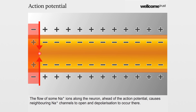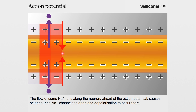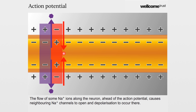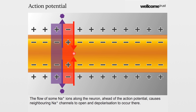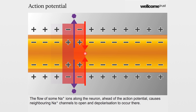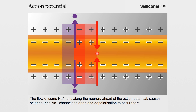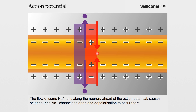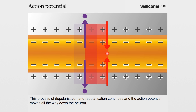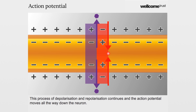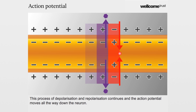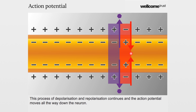The flow of some sodium ions along the neuron ahead of the action potential causes neighbouring sodium channels to open and depolarisation to occur there. This process of depolarisation and repolarisation continues and the action potential moves all the way down the neuron.